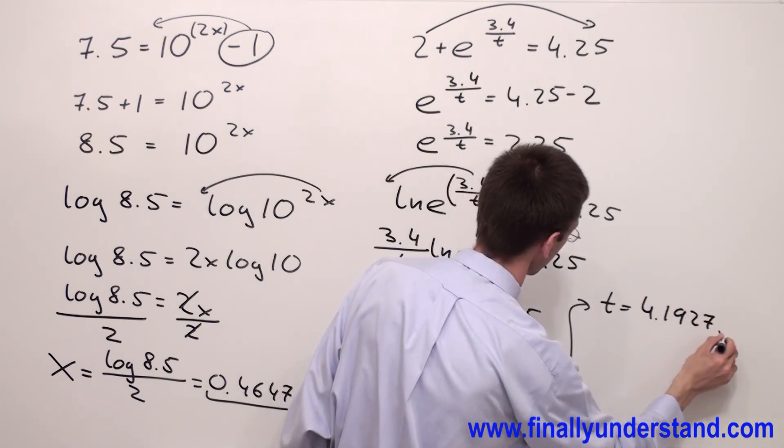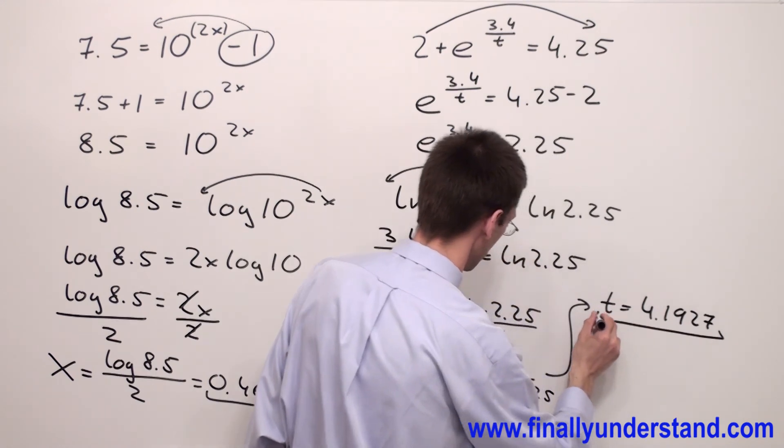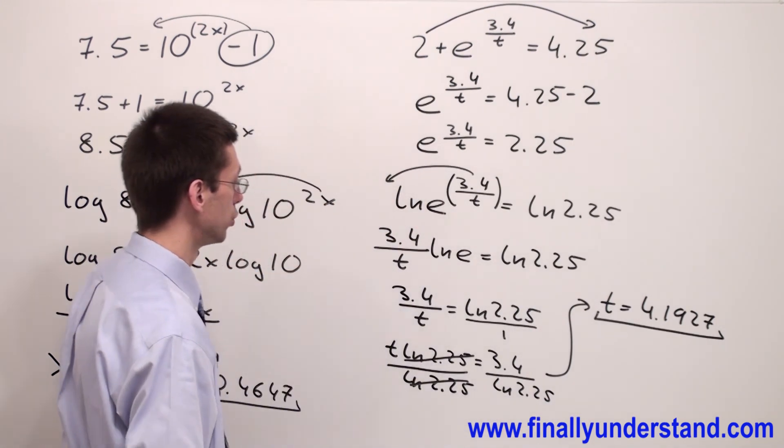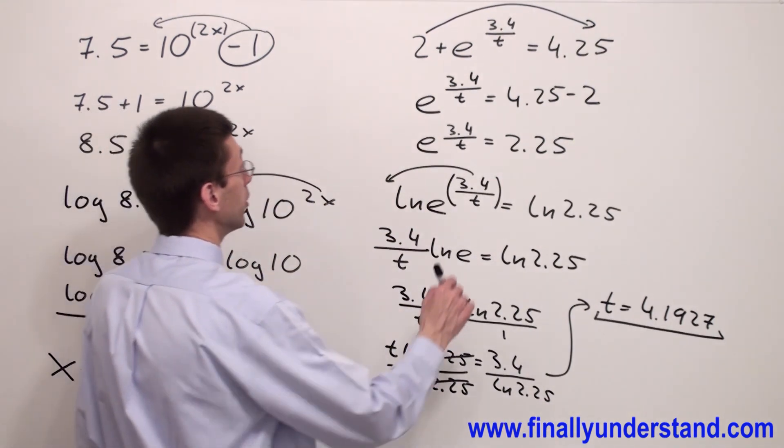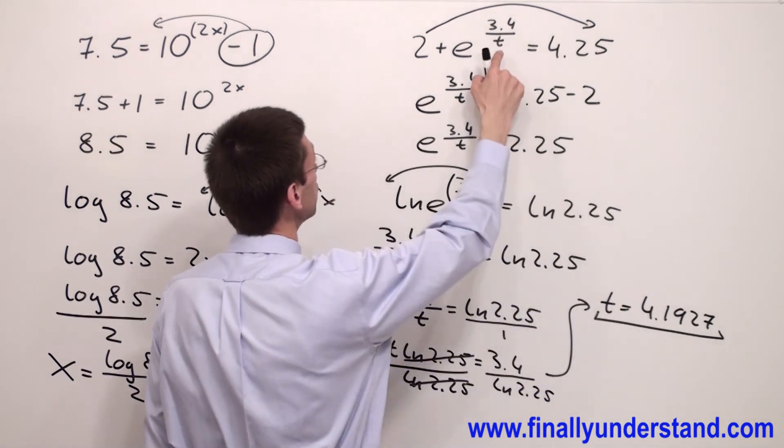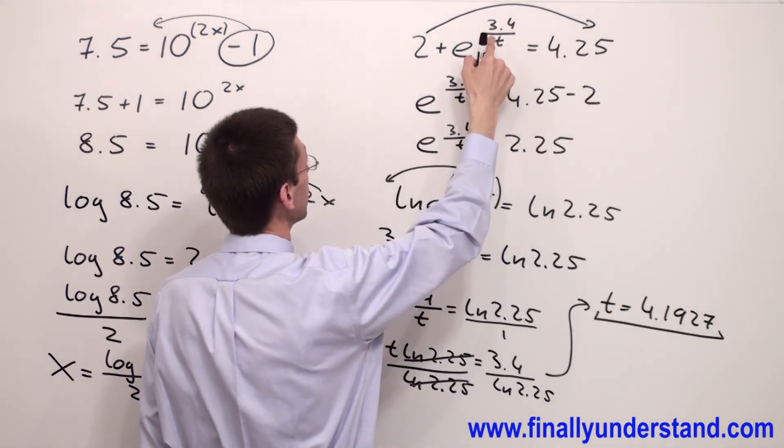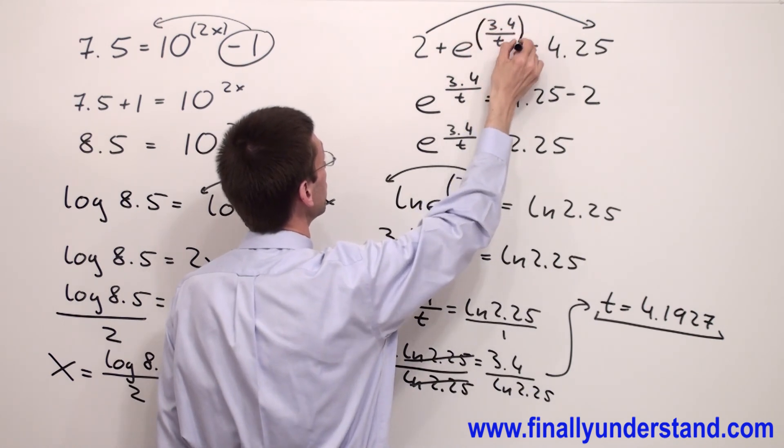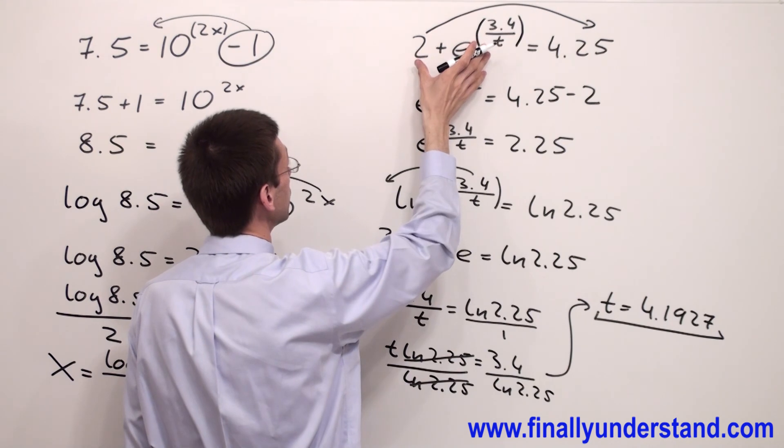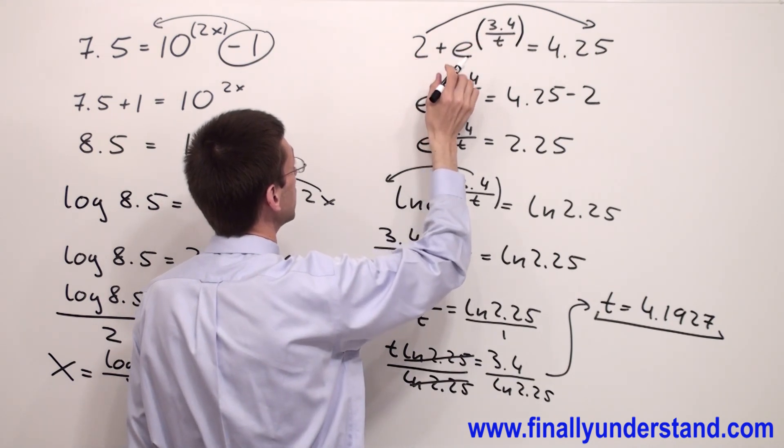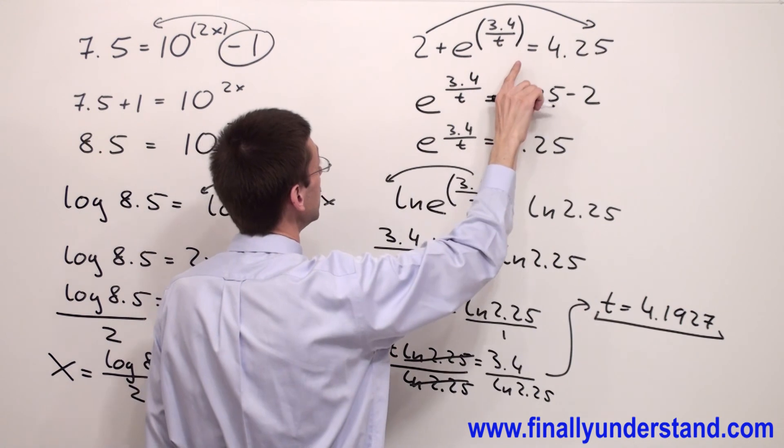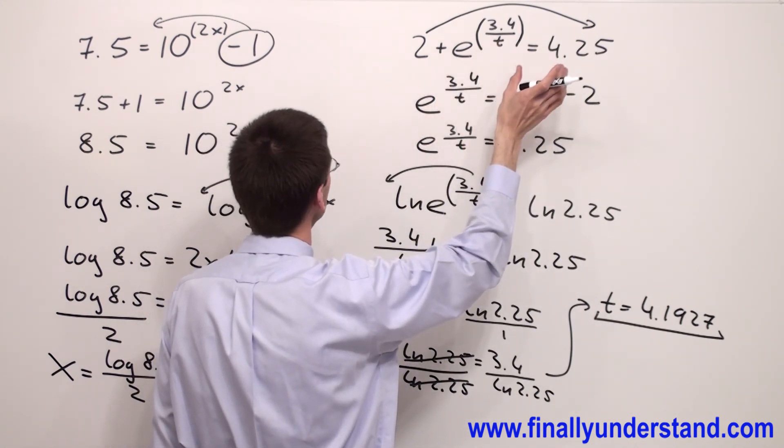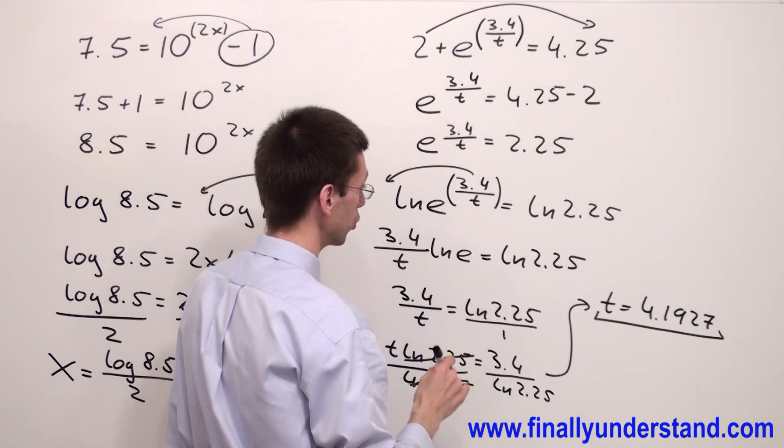4.1927. This is the solution to this problem. Again, if you want to verify your answer, you're supposed to plug in this value instead of t into the original equation. But make sure that you are going to add the parenthesis over here and calculate the left side. You're supposed to get the value on the left side approximately equal to 4.25. If left side is equal approximately to the right side means this is correct answer.